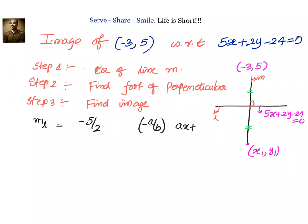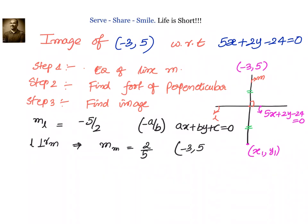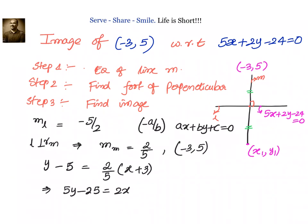The slope of line l is -5/2, because the slope of a line ax + by + c = 0 is given by -a/b. Now we know lines l and m are perpendicular to each other, which means the slope of line m will be 2/5. We know a point, that is (-3, 5), so we can find the equation of line m: y - 5 = (2/5)(x + 3).